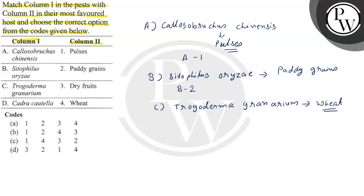And what is D? Cadra cautella. So what is its host? Dry fruits.